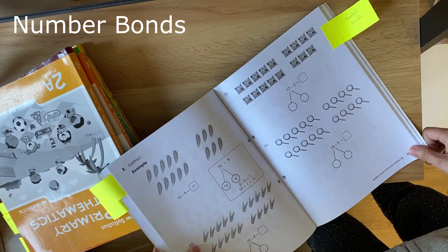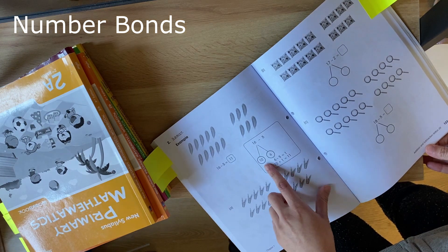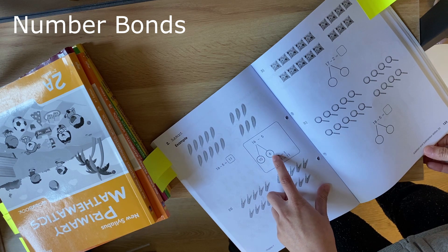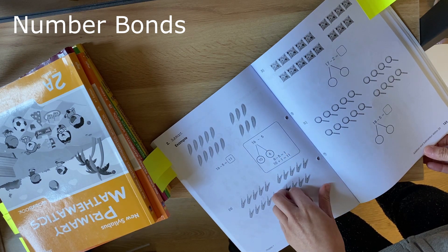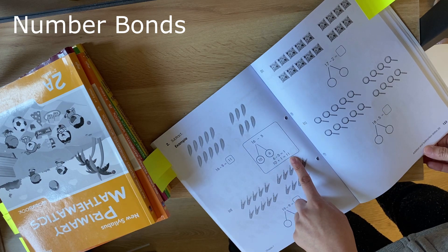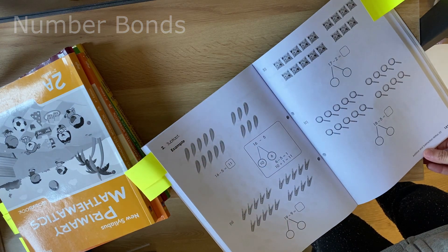And this is number bonds in subtraction. So you've got 16 minus 5 here. They've broken up the 16 into 10 and 6. Now you can do 6 take away 5, which is 1, and you add that back onto your 10 to get your answer 11. And this helps with the mental maths, which is a big emphasis in Singapore maths.